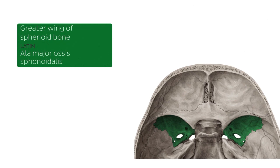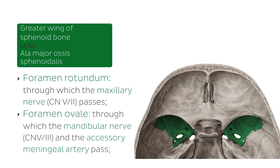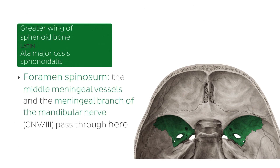One of them is the foramen rotundum, through which the maxillary nerve passes. There's also the foramen ovale, through which the mandibular nerve and the accessory meningeal artery pass. The third is the foramen spinosum, through which the middle meningeal vessels and the meningeal branch of the mandibular nerve pass.